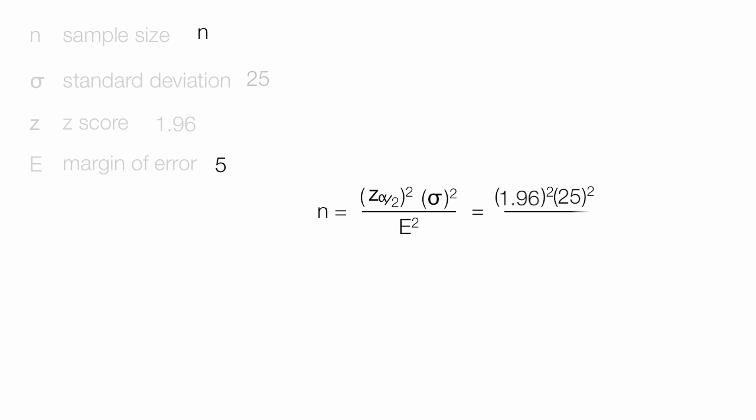Then I take 5, the margin of error, and don't forget to square that. This is equal to 3.84 times 625, divided by 5 squared, which is 25. This equals 96. My sample size would be 96 in this case.